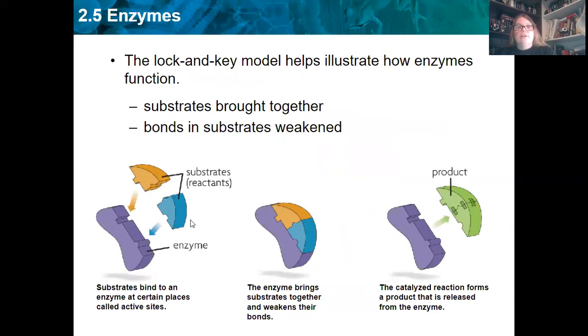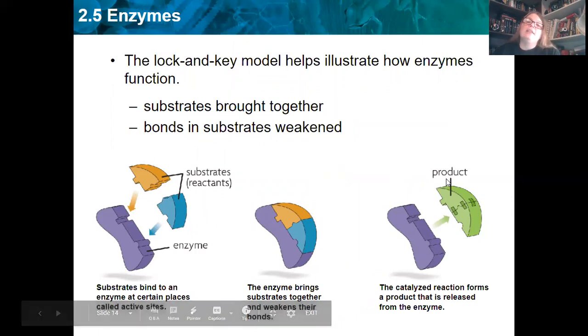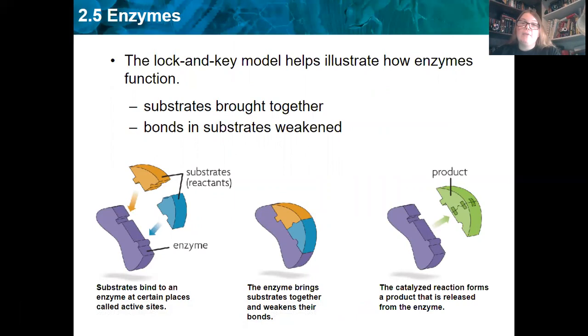Here we go, step by step. So the substrates bind to an enzyme at a place called an active site. The enzyme brings them together and weakens their bonds and then pushes them together so that they form a new product. So this product, this new thing it put together is released, and the enzyme gets to be reused. So I can use the same enzyme over and over again to make different products or to break things down.